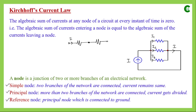Applying KCL at node A: with respect to this node, the main current I is an incoming current, and I1, I2, I3 are outgoing currents. Taking incoming currents as positive and outgoing as negative: I − I1 − I2 − I3 = 0, so finally we write I = I1 + I2 + I3. The algebraic sum of all incoming currents at a node equals the algebraic sum of all outgoing currents.